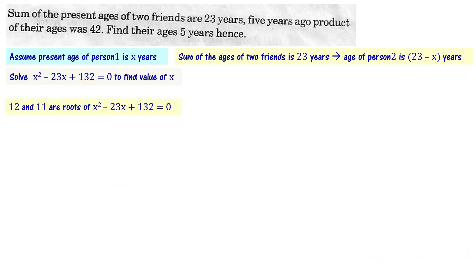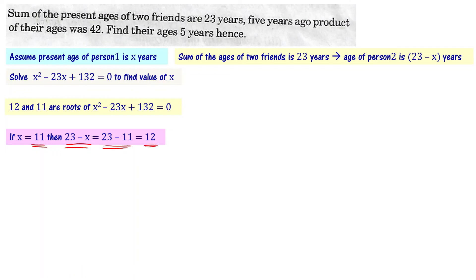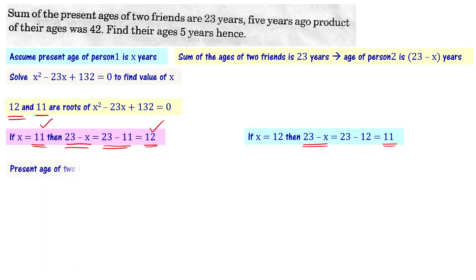If x = 11, then person one's present age is 11, and person two's present age is 23 − 11 = 12. If x = 12, then person one's age is 12 and person two's age is 23 − 12 = 11. In both cases, one person's age is 11 and the other's is 12. So the present ages of the two friends are 11 and 12 years.